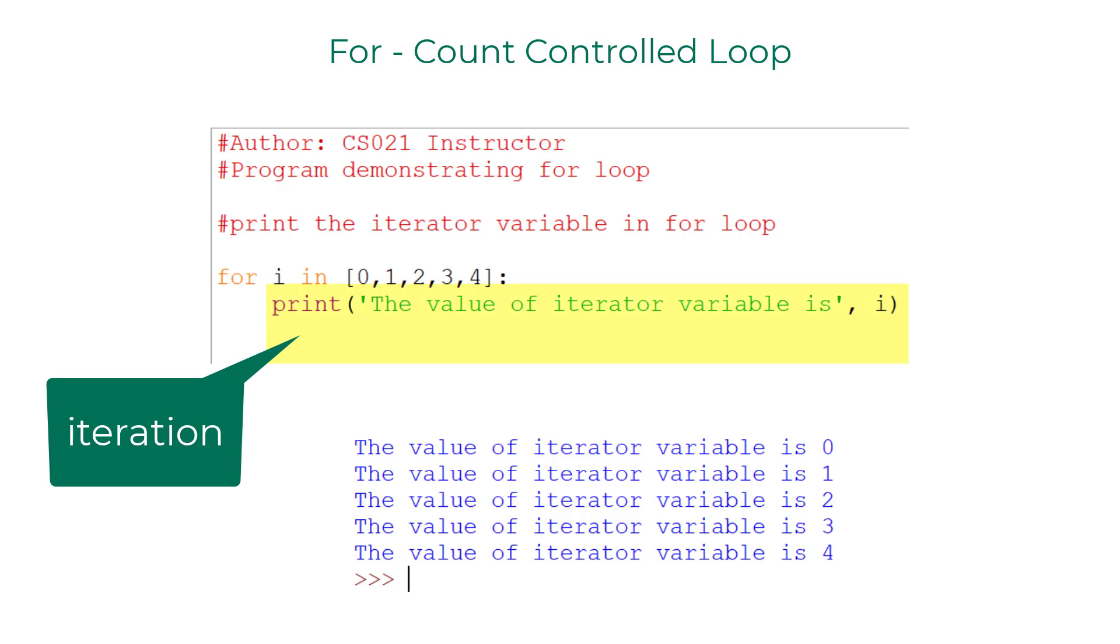When the program encounters a for loop it assigns the first value in the list provided to the iterator variable and executes the code within its scope once. In the next iteration the iterator variable will take the next value in the list and iterates once more. This repeats until we run out of all the values in the list.